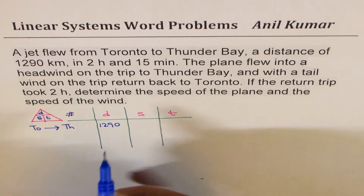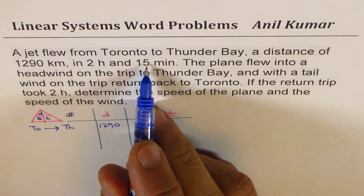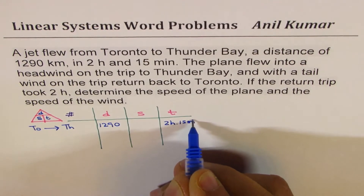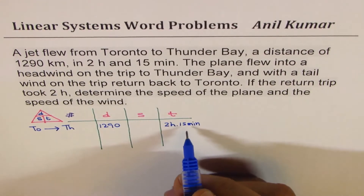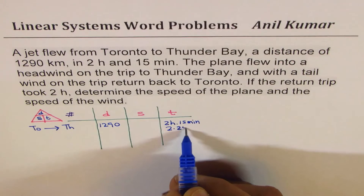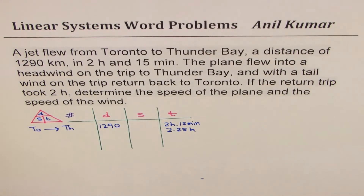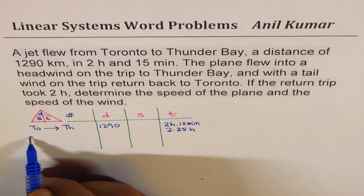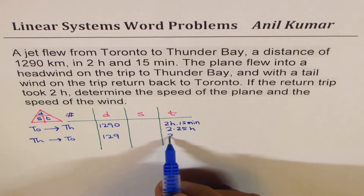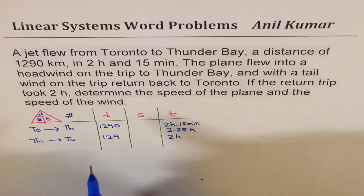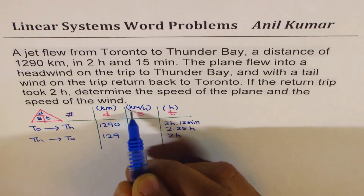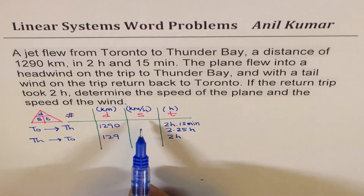The distance was 1290 kilometers. We don't know the speed yet. The time is 2 hours 15 minutes — since 15 minutes is a quarter of an hour, that's 2.25 hours. On the return trip from Thunder Bay to Toronto, the same distance of 1290 kilometers was covered in two hours. It's always a good idea to write the units — kilometers and kilometers per hour for speed, and hours for time.